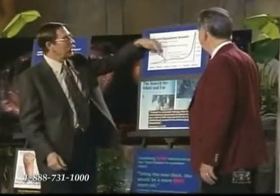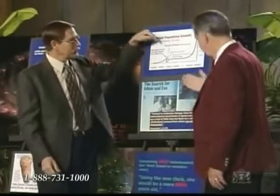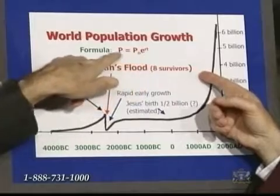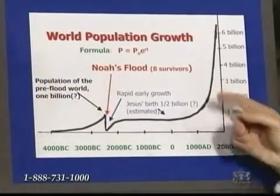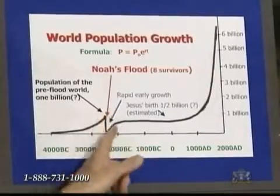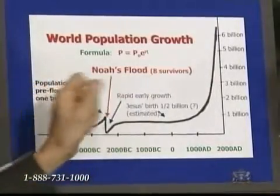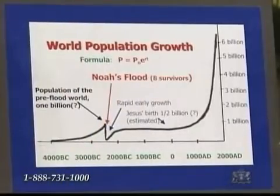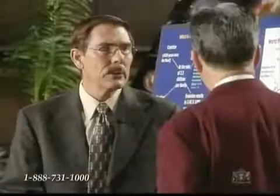Growth rate, of course, is birth rate minus death rate. We have this big interruption in the human population at the time of Noah's flood — eight survivors. Here is the population growth formula: P sub O, the original population, if we come from eight humans. This is from a pre-calculus math book at Kilgore College by Carl J. Smith — a well-accepted human population growth formula, with problems in there developed for students.